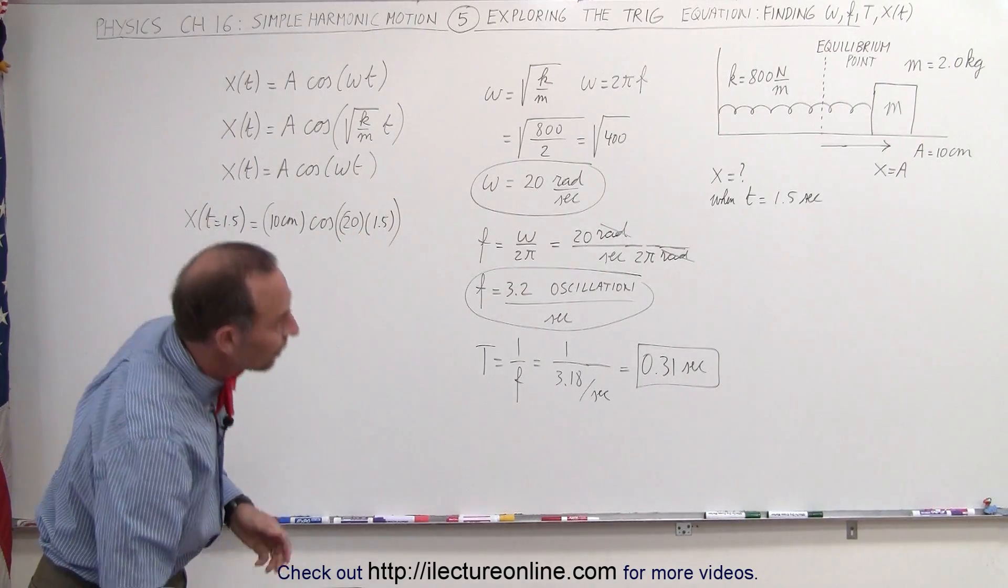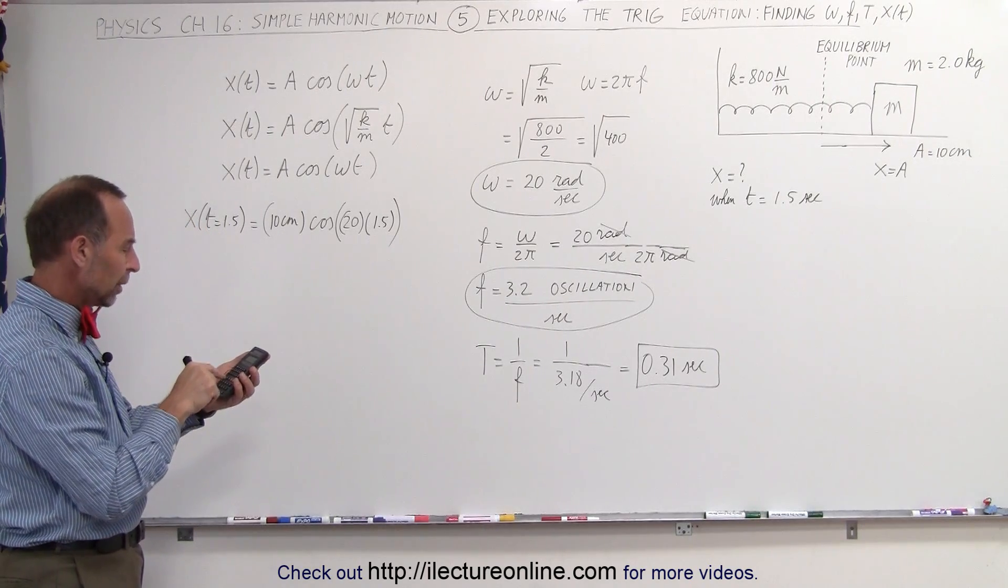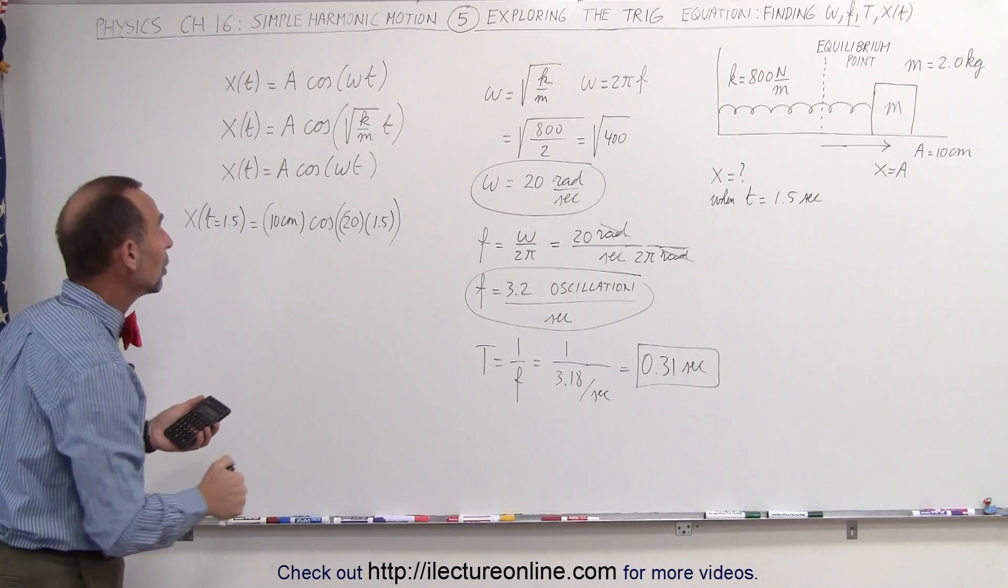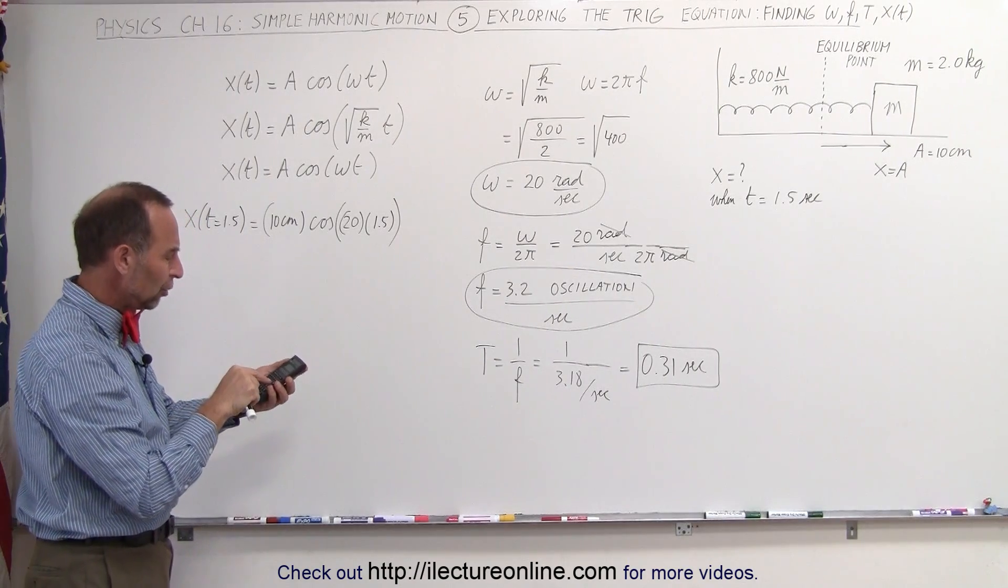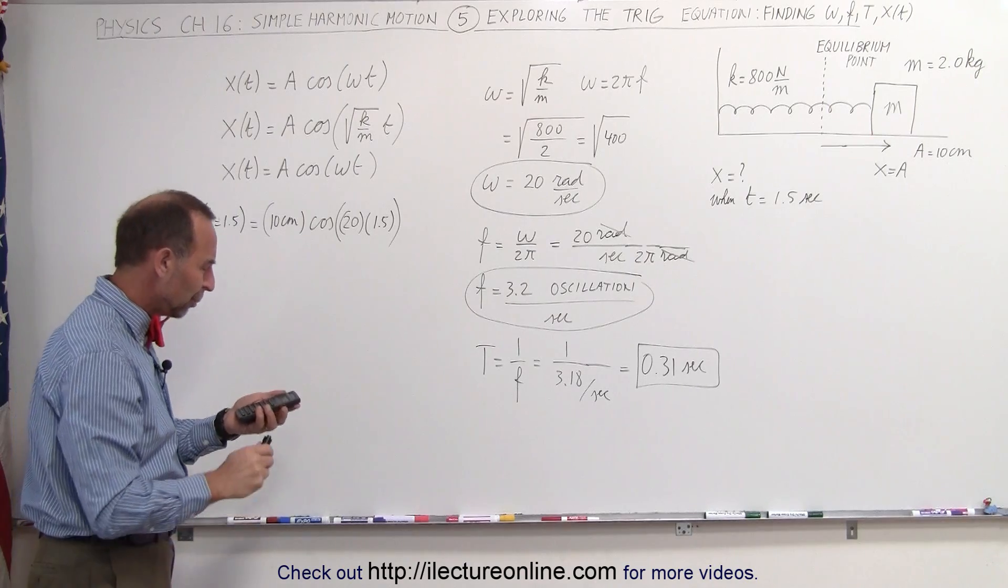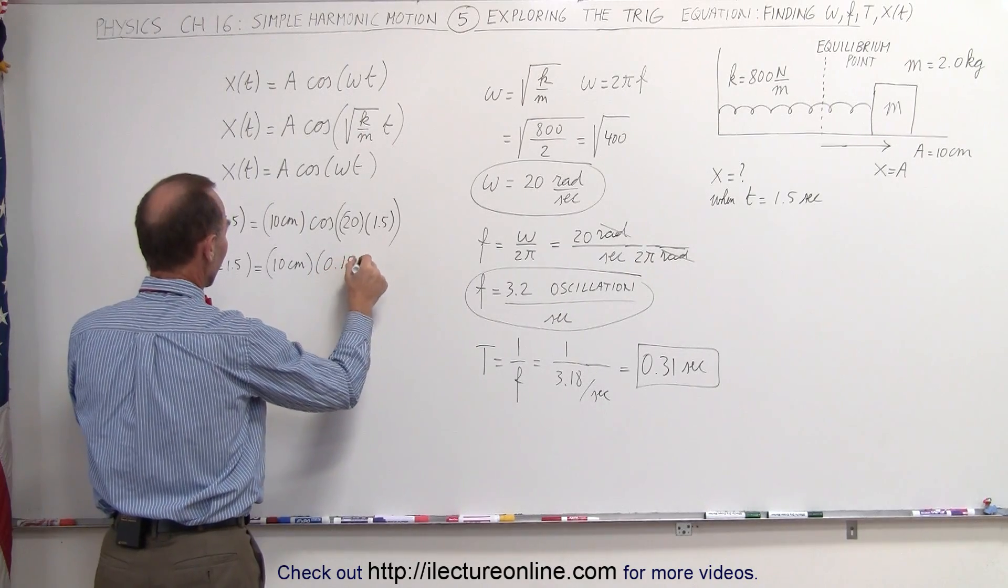So you want to make sure that your calculator is converted to the radian mode. In my calculator, I have to push the mode button and 5, that puts it in the radian mode. I plug in the number 30 and I find the cosine of 30, which is 0.154.